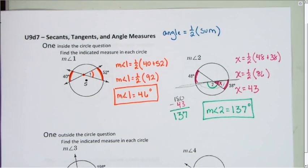That's how you find angles that are formed inside the circle, but not at the center of the circle.